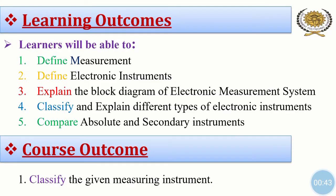Learning Outcomes. After watching this video, learners will be able to define measurement, define electronic instruments, explain the block diagram of electronic measurement system, classify and explain different types of electronic instruments, compare absolute and secondary instruments. The course outcome achieved by watching this video is to classify the given measuring instruments.